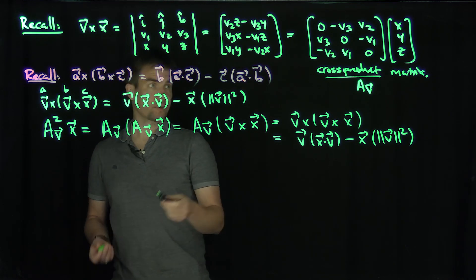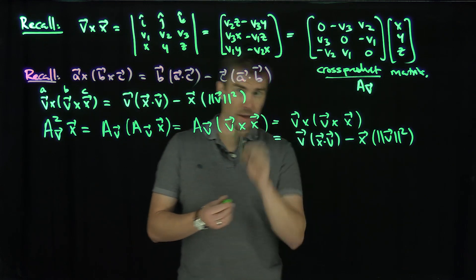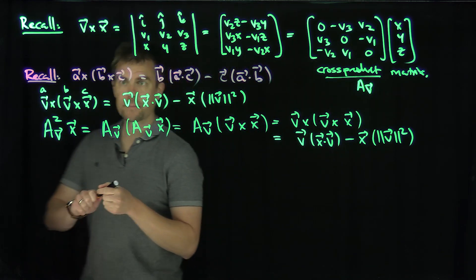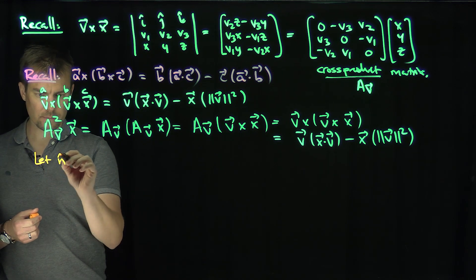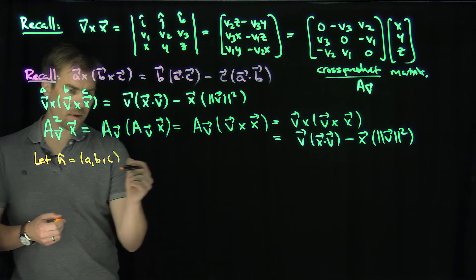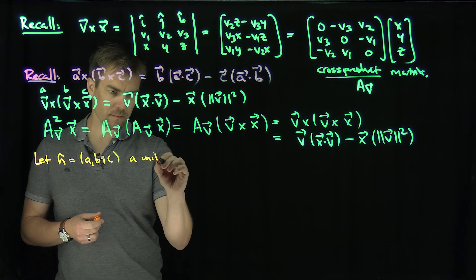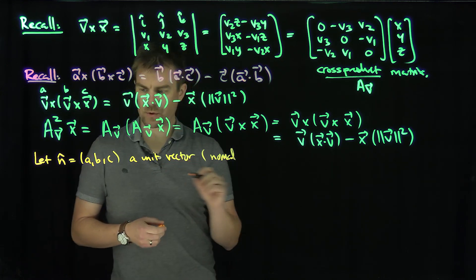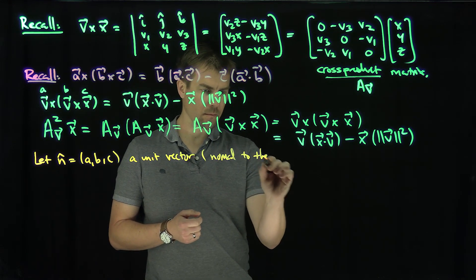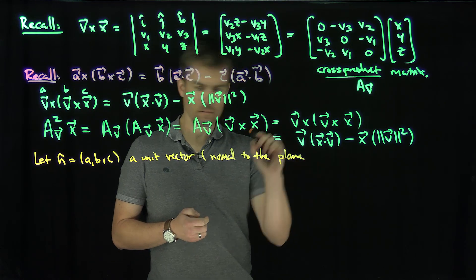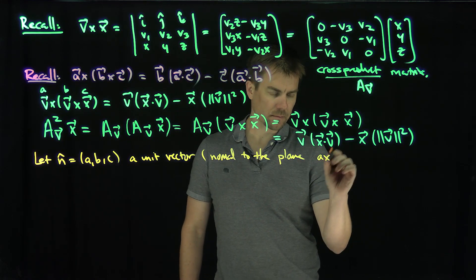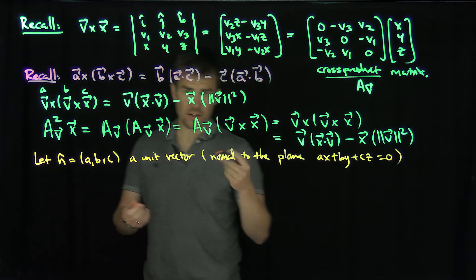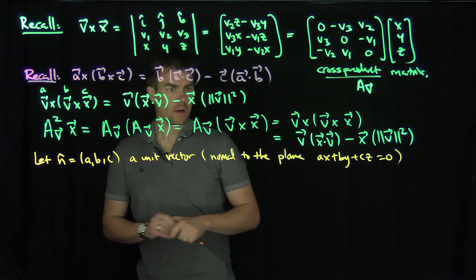Great. So that's the formula, and of course I can simply compute the square of this matrix. But now let me talk about a principal application. Let n = (a, b, c) be a unit vector, and let it be normal to the plane ax + by + cz = 0 (or equal to any d if you like). So it's normal to that plane.